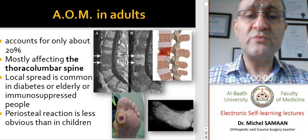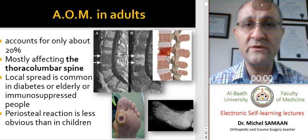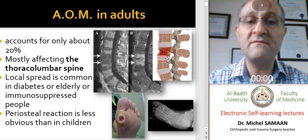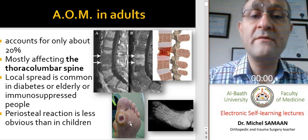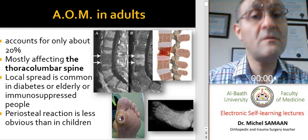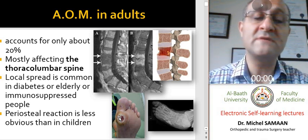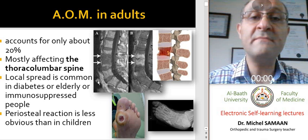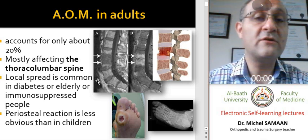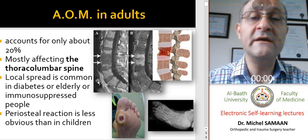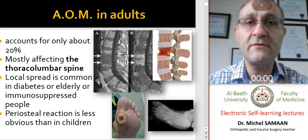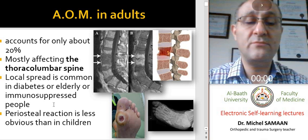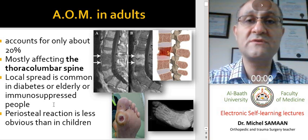In adults, osteomyelitis usually is not hematogenous. Usually osteomyelitis in adults is exogenous — that happens because of the direct spread, as in the diabetic foot for example. But also it may happen via bloodstream, and it's called hematogenous osteomyelitis, and it's located usually in the vertebral column, especially in the thoracolumbar region, in patients who have immunodeficiency problems or depressed or suppressed immunity.